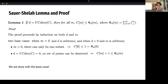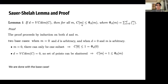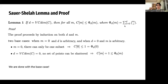We are now moving on to the statement of the Sauer-Shelah lemma. It states: suppose the VC dimension of family C is d. Then for all m, C[m] ≤ Φ(d, m), where Φ(d, m) is the sum of binomial coefficients C(m, i) for i from 0 to d. There were a few proofs for this lemma, but the easiest one proceeds by induction on both d and m.